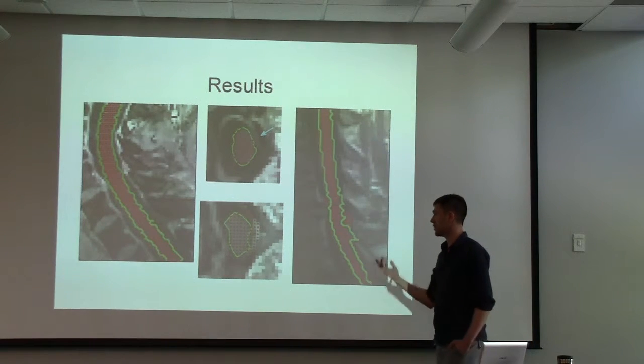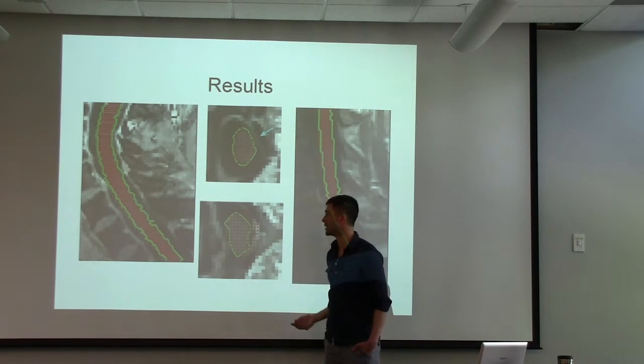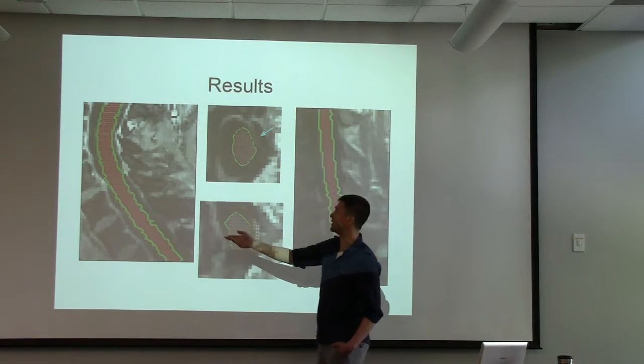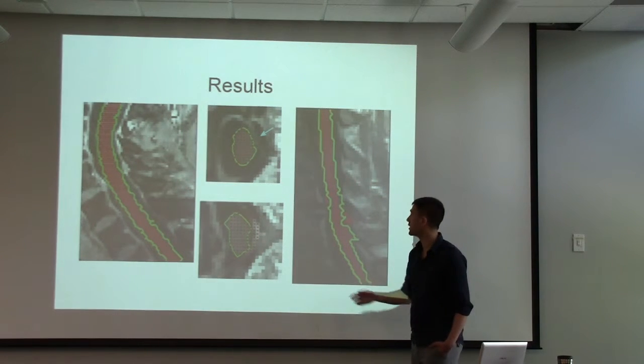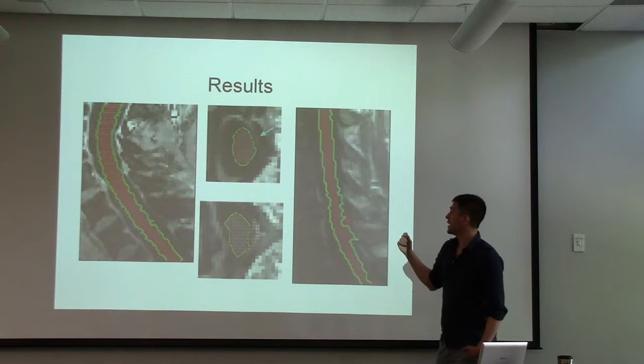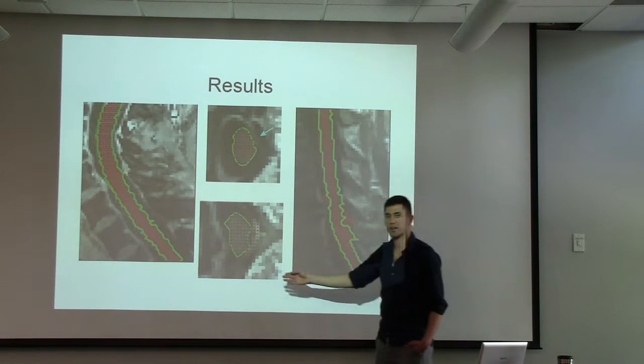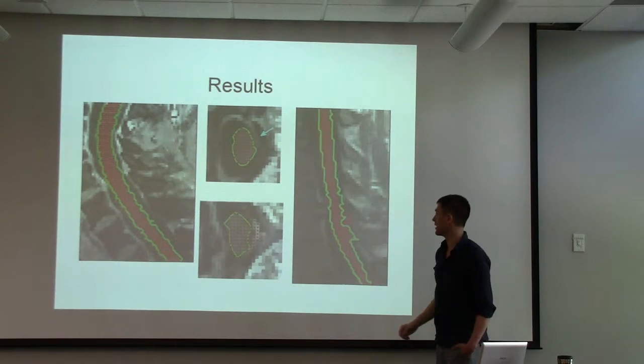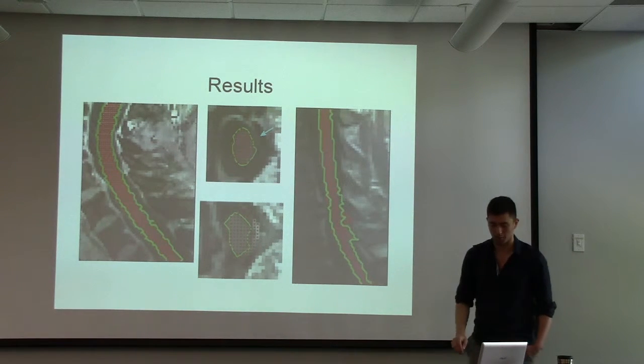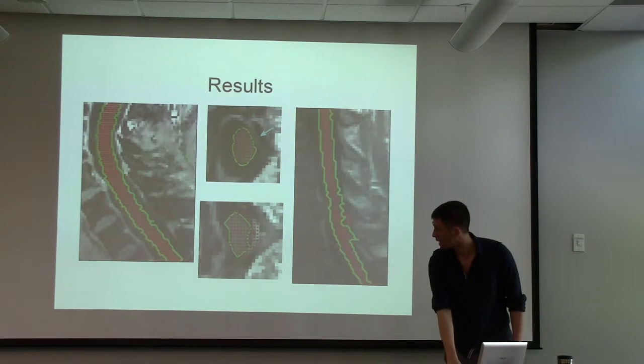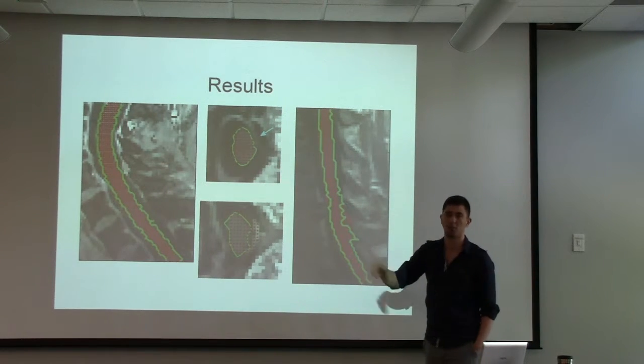So some results. How well does this work? On the left we can see where it worked pretty reasonably well. Green is where it has marked as spinal cord and red is where this method has determined spinal cord. On the right we can see an area where it didn't work so well, particularly here where it's latched onto the wrong boundary. Again you can see that on the sagittal slice here where again it's on the wrong boundary. So these types of problems where it latched onto the boundary kind of motivated our next approach for segmentation.